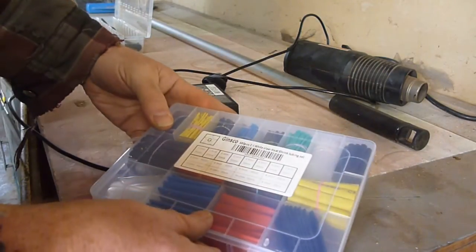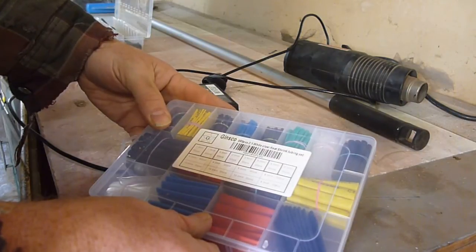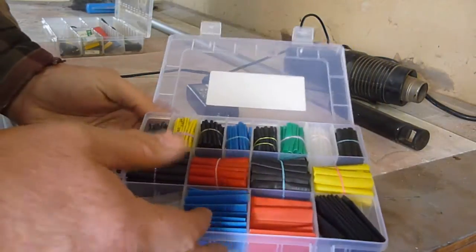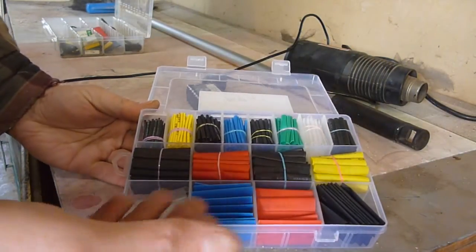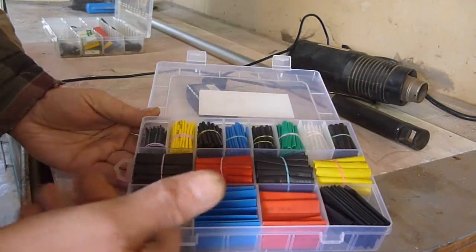It's the Ginsco 580 piece shrink wrap here. It's got all different sizes. I could see this working really well, like on trailer wiring, or even automotive wiring, that kind of stuff.